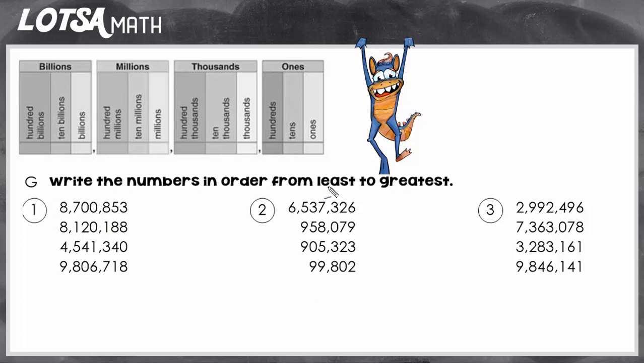I'm looking for the least to greatest. So out of these numbers—eight, eight, four, and nine—four is the least. So the number in this group that's going to be the least is going to be the one that is four million. I'm going to mark it off since I've already used it.